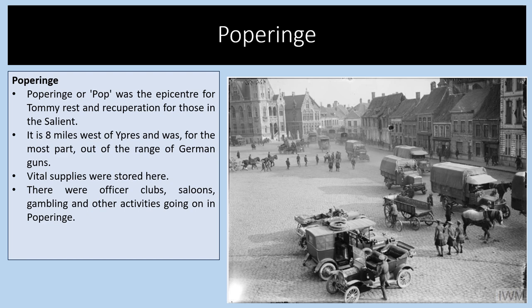We will also visit the town of Poperinghe, to the west of Ypres. Poperinghe, known as 'Pop', was the epicentre of rest and recuperation for soldiers — sometimes known as Tommies — in the Salient. It's eight miles west of Ypres and was, for the most part, out of range of German guns. Vital supplies were stored here, and there were officer clubs, saloons, gambling activities, and lots of other things going on during the First World War.